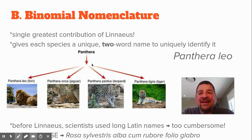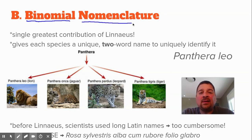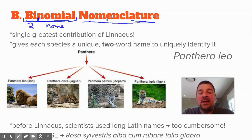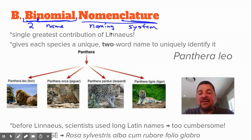Another big benefit that Linnaeus added to classification systems at the time is binomial nomenclature. If you look at the prefix, 'bi' means two. 'Nomen' — like in Spanish, '¿cuál es tu nombre?' — is Latin for name. So 'nomenclature': 'nomen' means name, and '-clature' would be system. So looking at the roots: a two-name naming system. What this does is it gives each species a unique two-word scientific name.